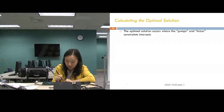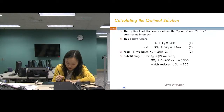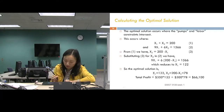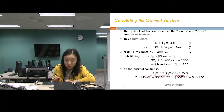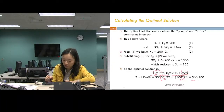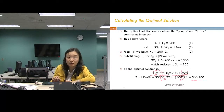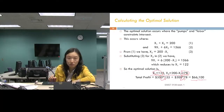The optimal solution occurs where the pump and labor constraints intersect. Solving those two equations gives X1 = 122 and X2 = 78. Substituting into the objective function gives a total profit of $66,100. When answering a question, make sure you state both the optimal decision variable values and the optimal objective function value.